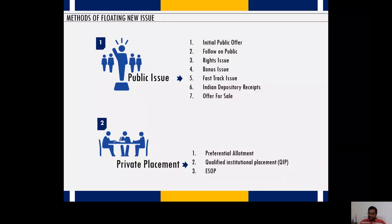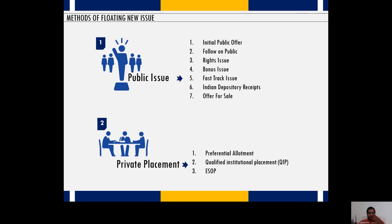Good afternoon. In yesterday's session we discussed all seven options which constitute the part of the public issue process. These are the seven methods or routes through which an organization that wants funds for various reasons can access the capital markets and procure funds.